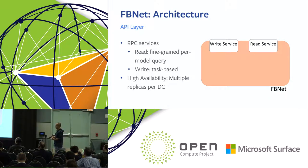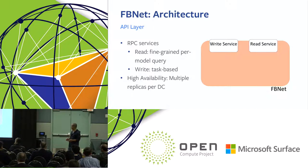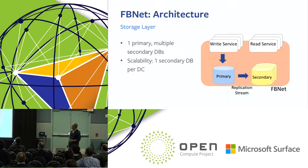For users to read and write data stored in FBNet, we provide an RPC service. For reads, users are usually interested in per-object operations, so we provide fine-grained queries. For writes — like creating a circuit where we need to create multiple objects and relationships — we implement write services as task-oriented. To provide high availability, we provide multiple instances of read-write service across our data centers. When users write to FBNet, it goes through our write RPC and data is written to the primary database, continuously synchronized to a secondary database, and every read goes through the secondary database.